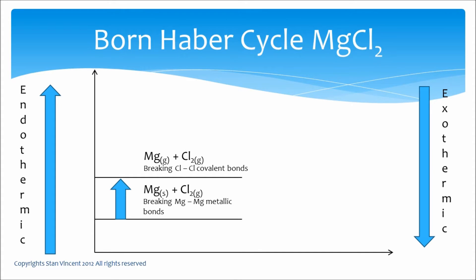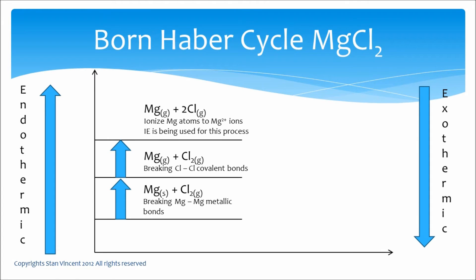The next step is to break the chlorine-chlorine bond so that we have chlorine atoms. The energy required for breaking the chlorine-chlorine bond is called bond dissociation energy, and that change is again endothermic. At this point, we have magnesium gas and chlorine atoms, both in the gas state. We no longer have diatomic chlorine molecules — we have monoatomic chlorine atoms.